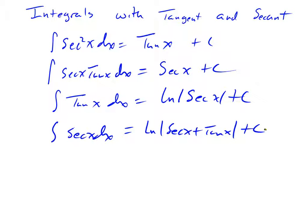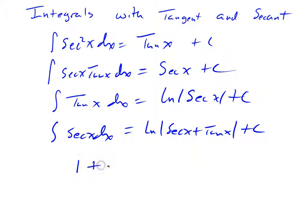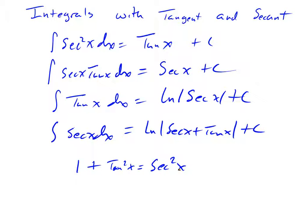I also want to point out that these are essentially the relationships from calculus between secant and tangent. There's also the relationship from trig, where the Pythagorean relationship 1 plus tangent squared of x is equal to secant squared of x. So, like sines and cosines, they're related with both calculus properties and trig properties.